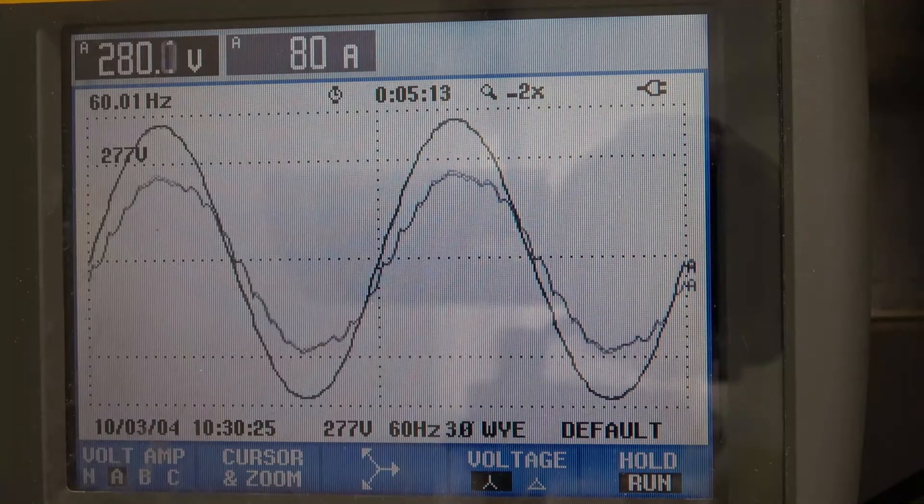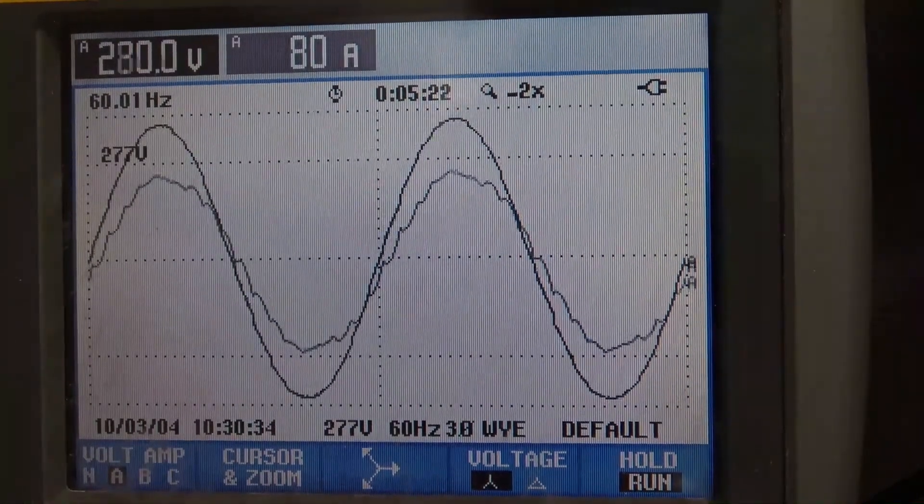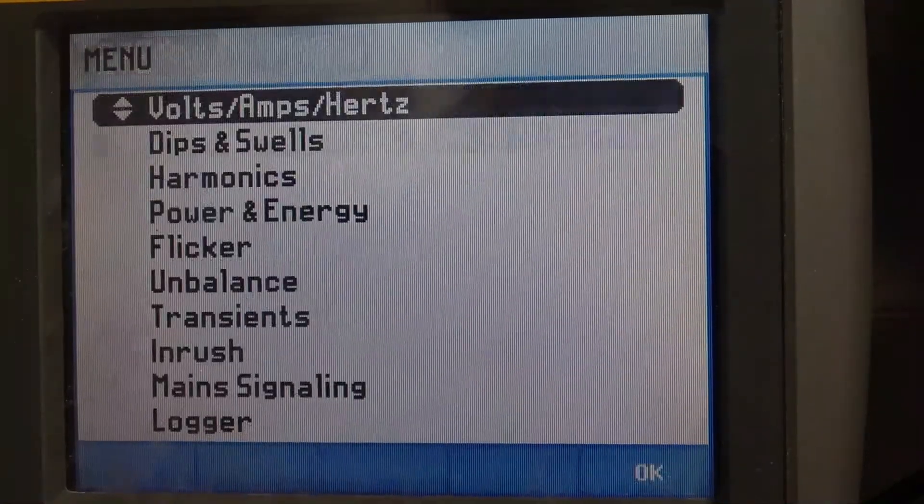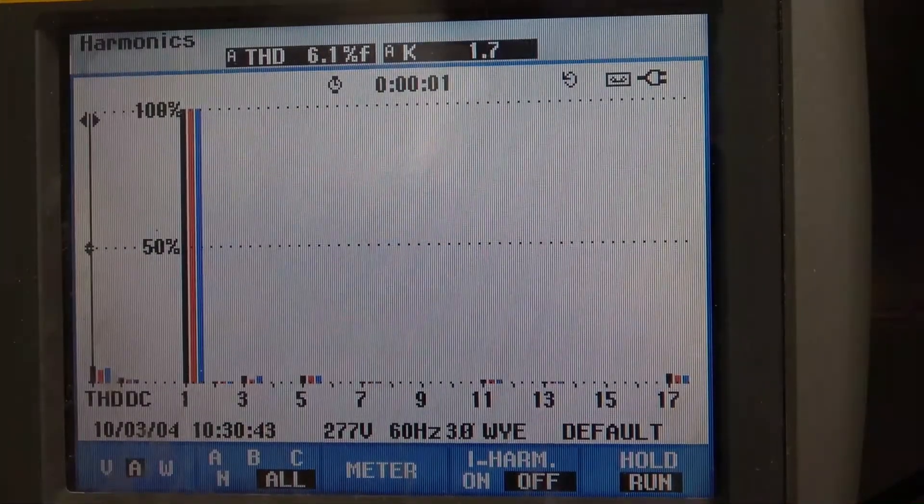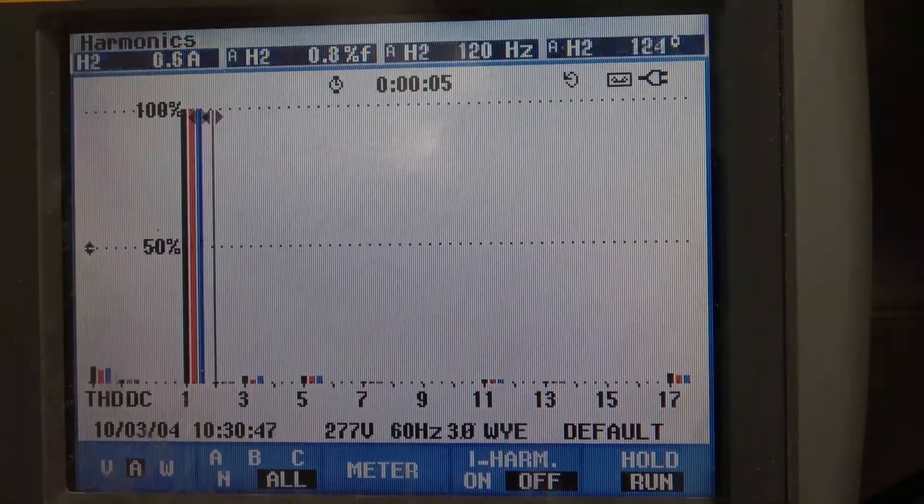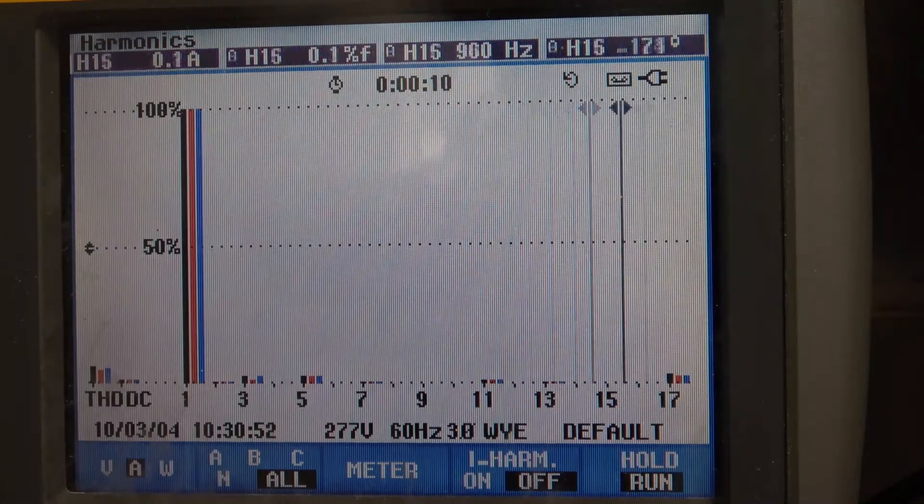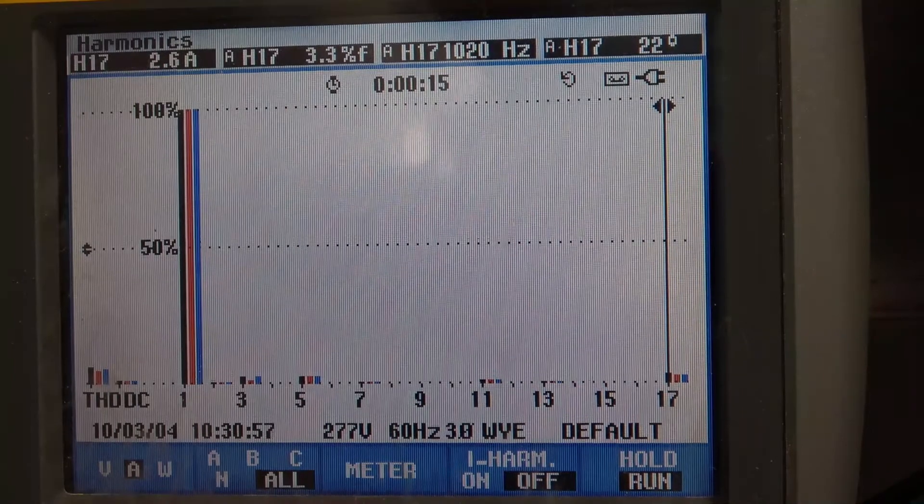Right away, you notice a couple of things. The waveform is pretty clean. For 18-pulse, we're going to have 18 plus or minus 1 harmonics, NP plus or minus 1. So we're going to expect 17th and 19th, and 2 times 18, 36 plus or minus 1, 35th and 37th. If we look at the current, we see the 17th harmonic is the most predominant harmonic. The actual amps of 17th is right around 2.6 amps.